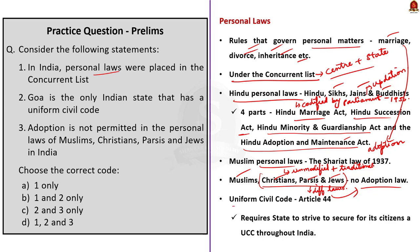The Constitution in its Article 44 requires the state to strive to secure for its citizens a uniform civil code throughout India. Despite being mentioned in the constitution, the uniform civil code is not codified in India, and Goa is the only state that has a uniform civil code. Now the question: Statement 1 — 'In India, personal laws are placed in the concurrent list' — is correct. Statement 2 — 'Goa is the only Indian state that has a uniform civil code' — is also correct. Statement 3 — 'Adoption is not permitted in the personal laws of Muslim, Christians, Parsis, and Jews in India' — is also correct. All three statements are correct, so the correct answer is Option D, 1, 2, and 3.